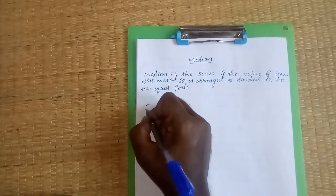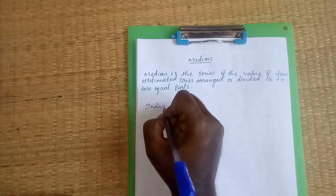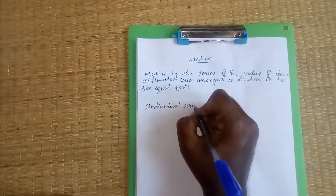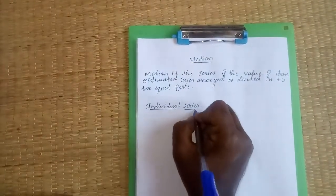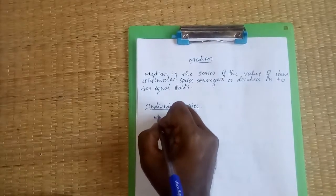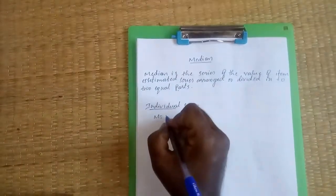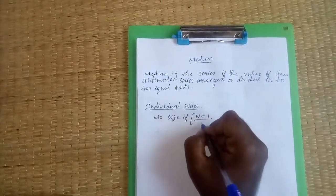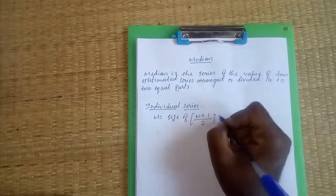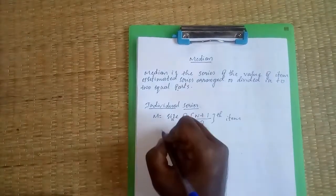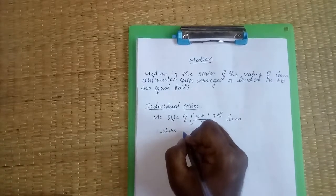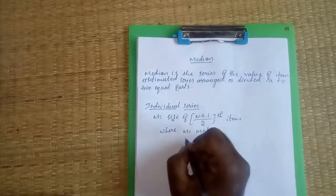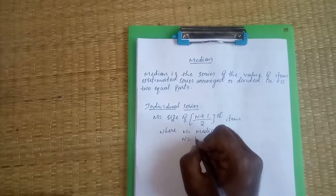So, individual series. For individual series, the formula is M equals size of n plus 1 divided by 2 item, where M equals median and n equals number of observations.